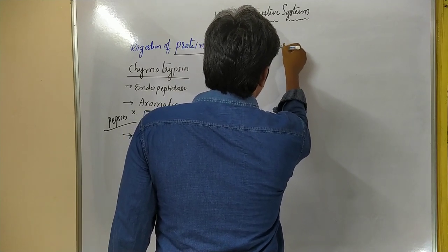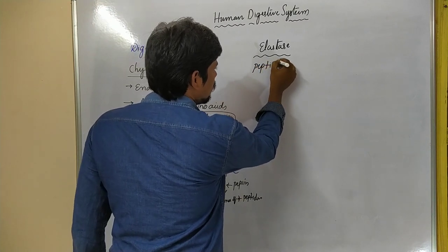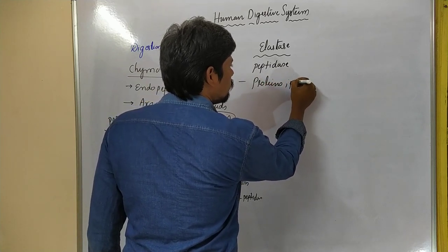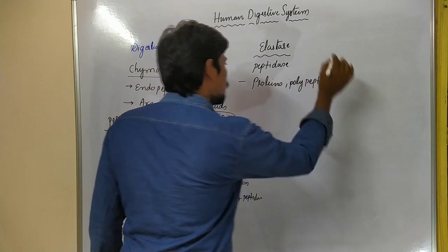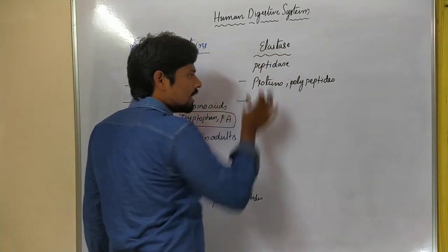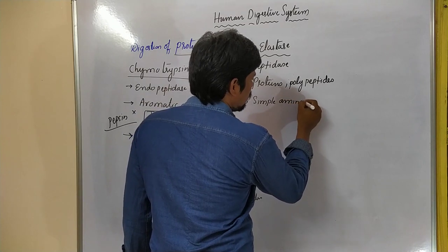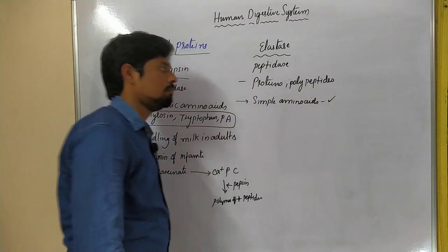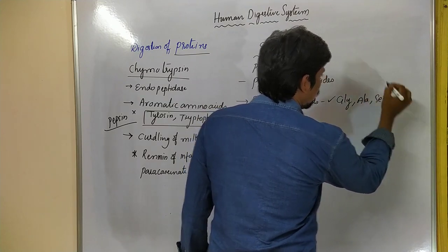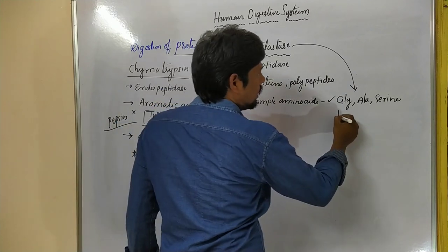The next enzyme is elastase. Elastase acts on proteins and polypeptides. Elastase has a specialized character: it only acts wherever simple amino acids are present, such as glycine, alanine, and serine. Wherever glycine, alanine, or serine is present, elastase acts there and produces peptides.